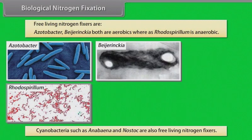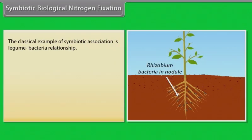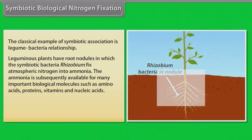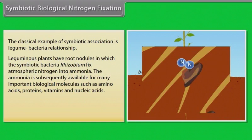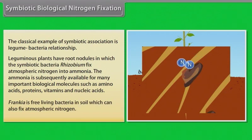Cyanobacteria such as Anabaena and Nostoc are also free-living nitrogen fixers. Symbiotic biological nitrogen fixation: the classical example of symbiotic association is the legume-bacteria relationship. Leguminous plants have root nodules in which the symbiotic bacteria Rhizobium fix atmospheric nitrogen into ammonia. The ammonia is subsequently available for many important biological molecules such as amino acids, proteins, vitamins and nucleic acids. Frankia is a free-living bacteria in soil which can also fix atmospheric nitrogen.